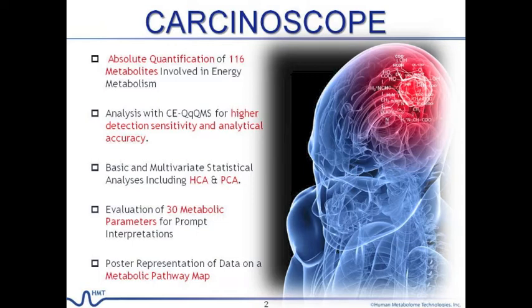Fourth, the Carcinoscope package includes a multivariate statistical analysis service, through which results of hierarchical clustering analysis and principal component analysis are provided. And finally, Carcinoscope reports the data with a poster-sized metabolic pathway map on which all the data and statistical results are superimposed.